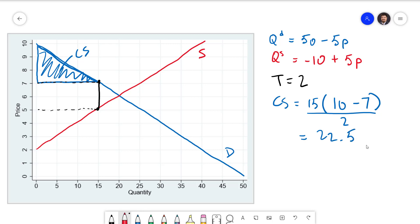For the producer surplus we have the area between the supply curve and the price received by the sellers. The price received by the sellers is 5. So we're going to have this triangle right here. Shade that in as well.